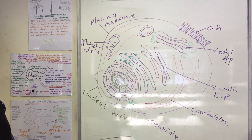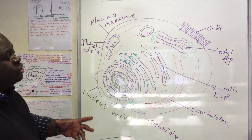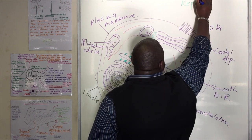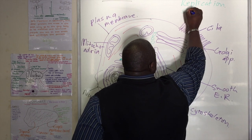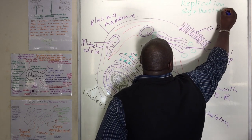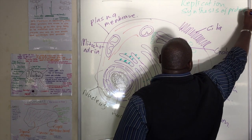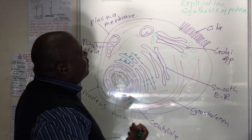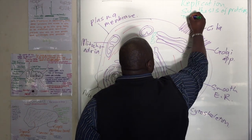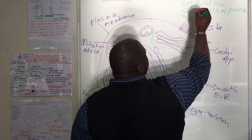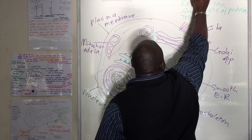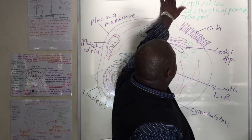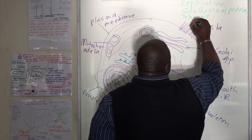Let's talk about what the cell is supposed to do. What is the job of a cell? The cell should be able to do three basic things: it should be able to replicate or divide; it should be able to synthesize proteins; and equally it should be able to transport material. It might also generate energy — energy generation.